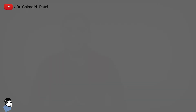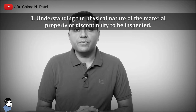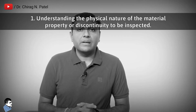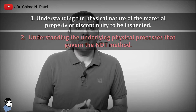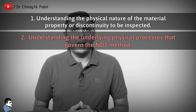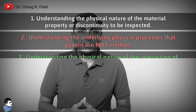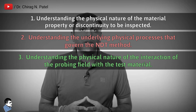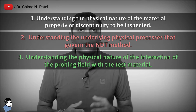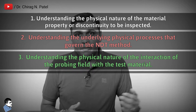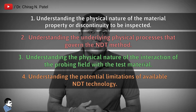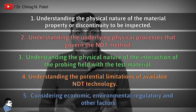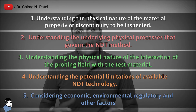Now let's see the steps to choosing an adequate NDT method. 1. Understanding the physical nature of the material property or discontinuity to be inspected. 2. Understanding the underlying physical processes that govern the NDT method. 3. Understanding the physical nature of the interaction of the probing field with the test material. 4. Understanding the potential limitations of available NDT technology. 5. Considering economic, environmental, regulatory and other factors.